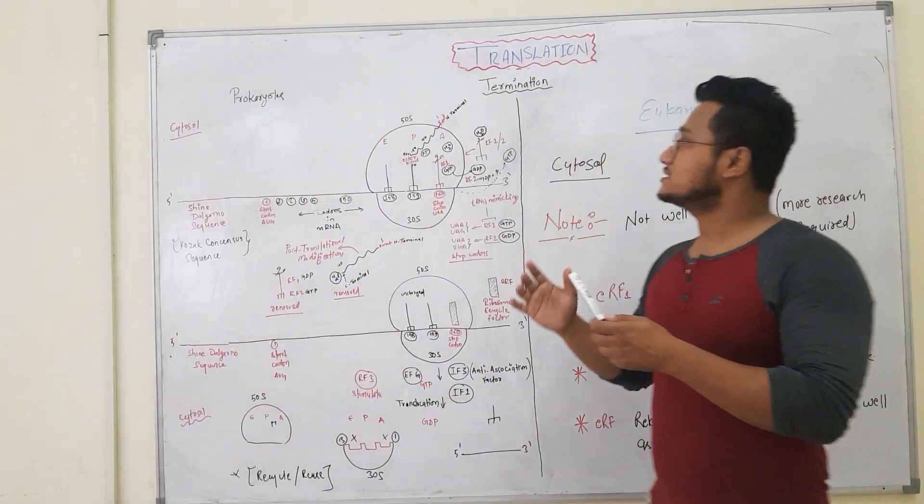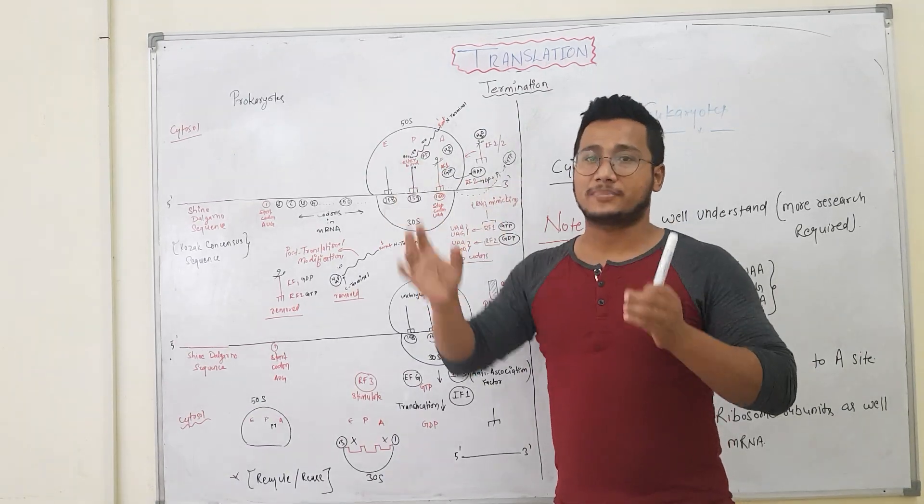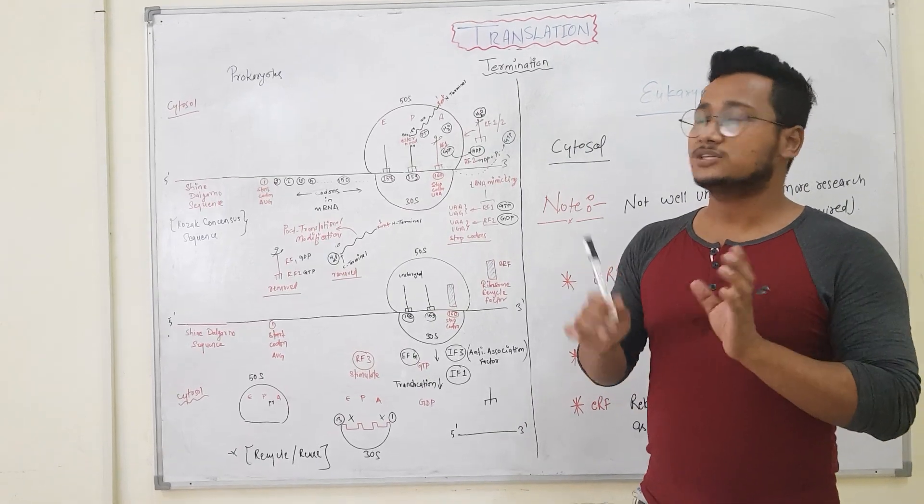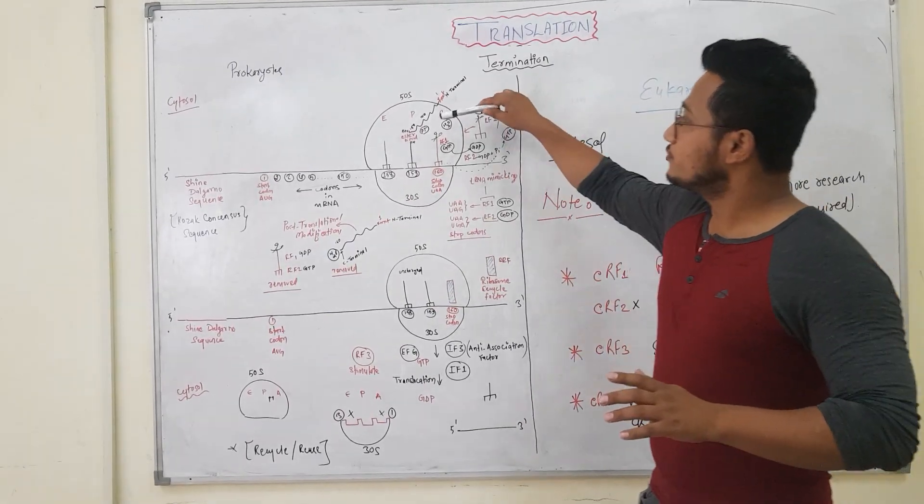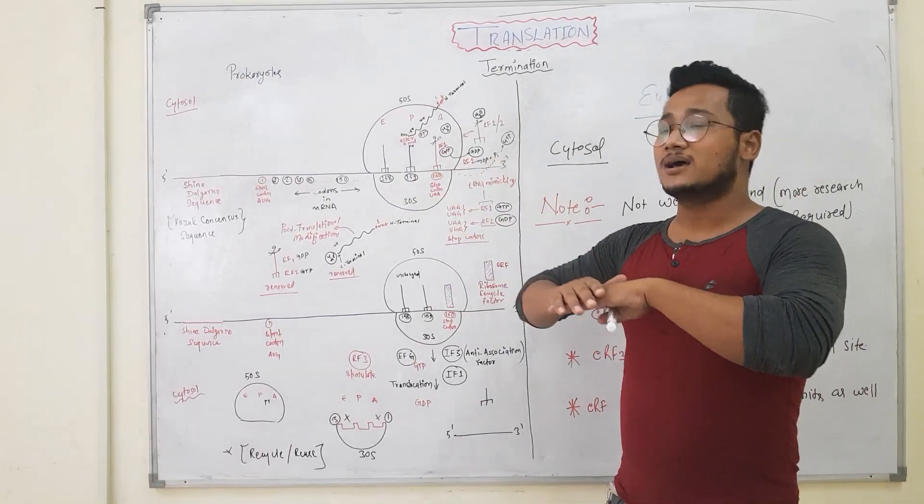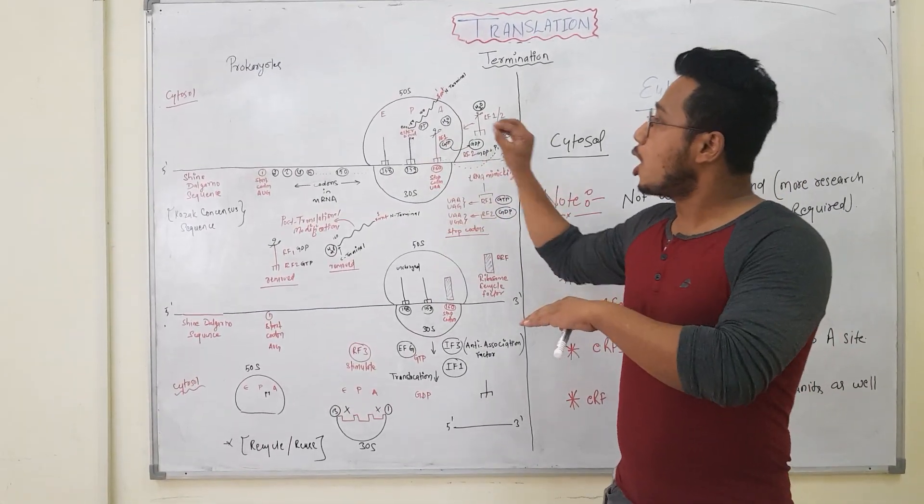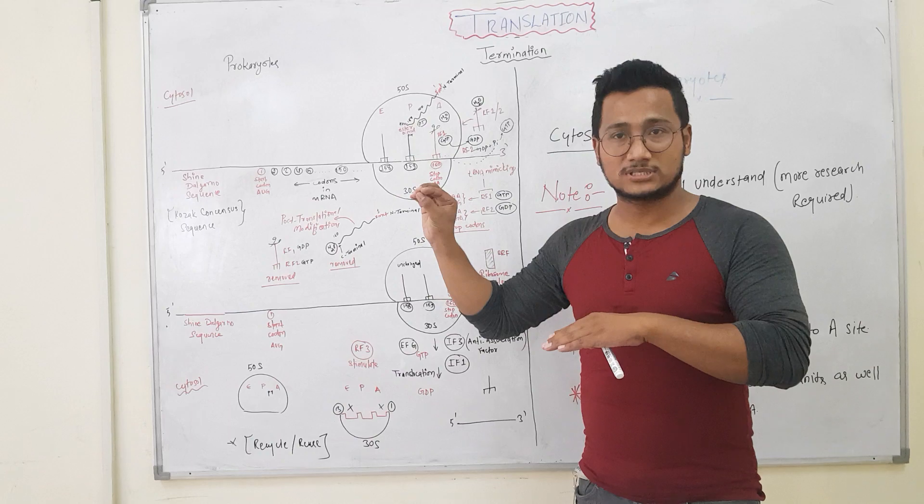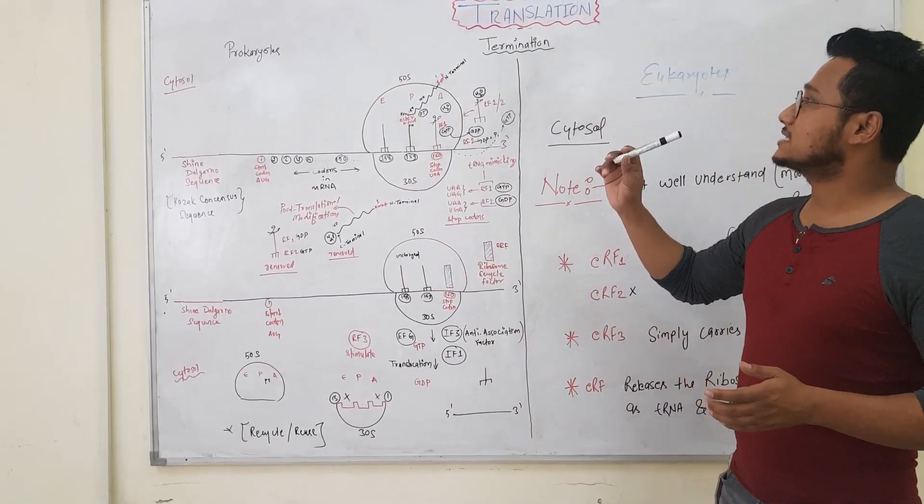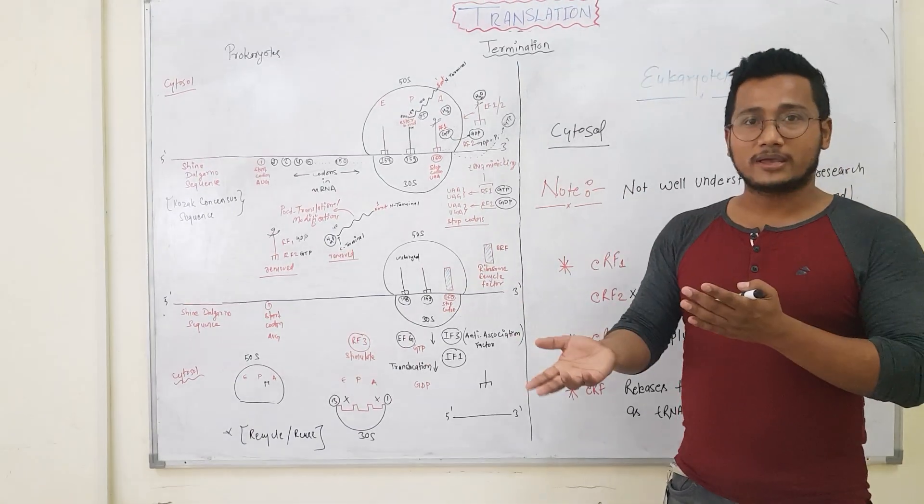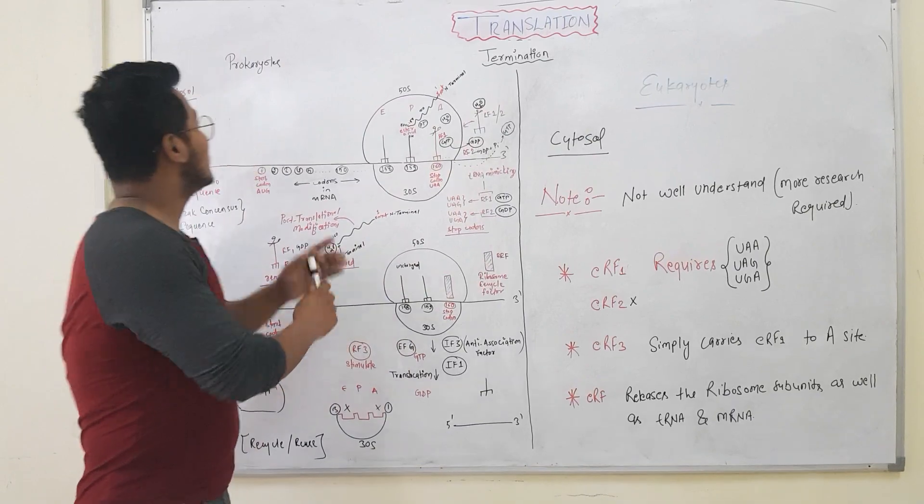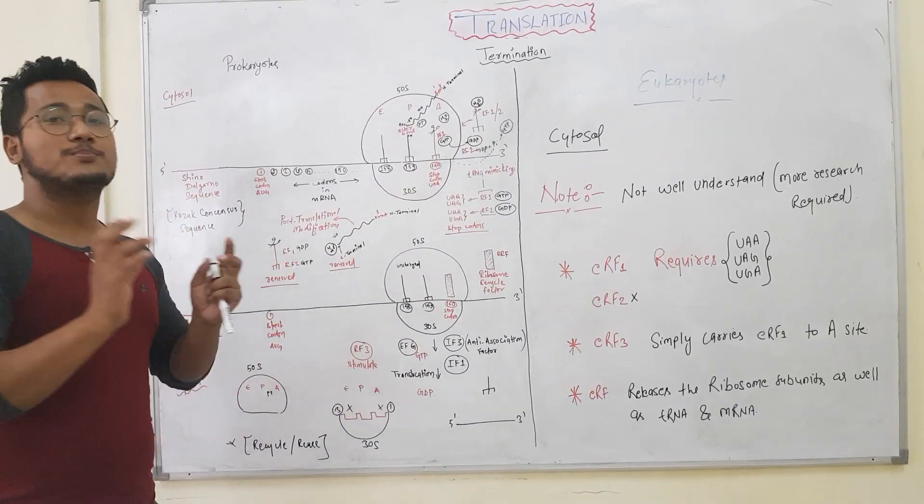Therefore, termination basically means halting of the growing peptide. In a very simple way, termination means removal of the peptide along with the disassembly of all the components that were used during translation. Like elongation, the termination in prokaryotes and eukaryotes is also pretty much the same, except for certain points.